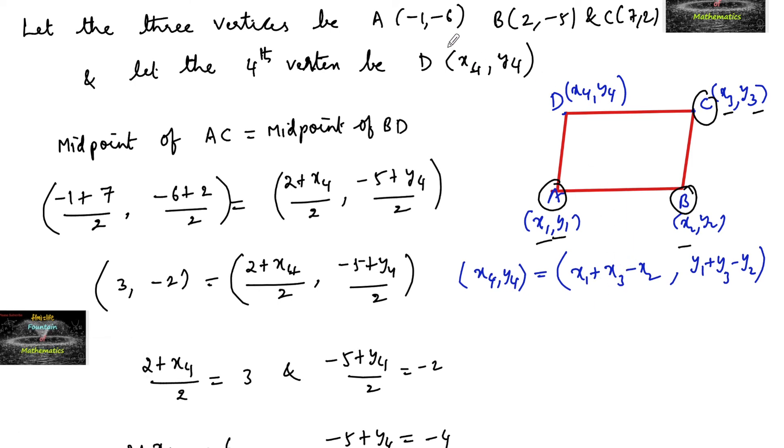Using the formula: x₁+x₃-x₂ = -1+7-2 = 4, and y₁+y₃-y₂ = -6+2-(-5) = 1. So we get the fourth vertex (4,1).